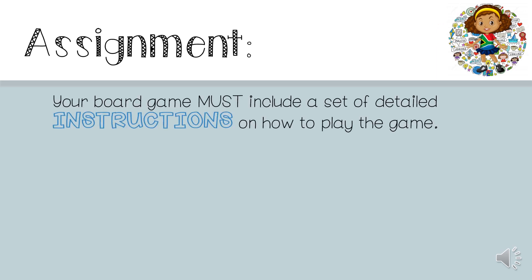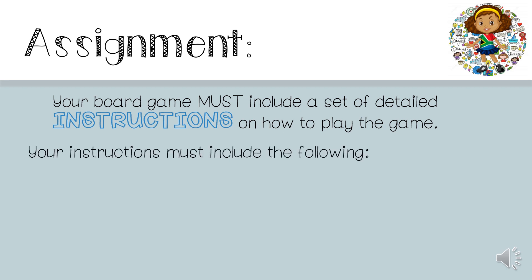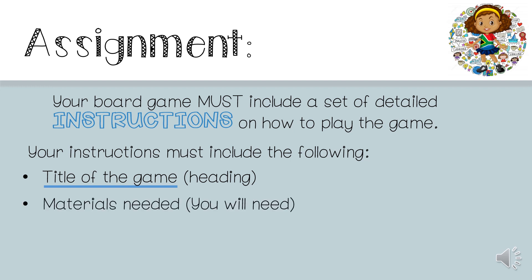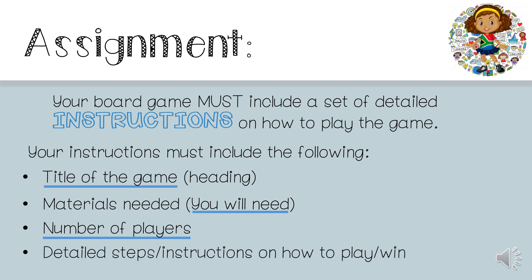Your board game must include a set of detailed instructions on how to play the game. Your instructions must include the following: the title of the game, which is the heading; materials needed — this is the 'You Will Need' part from the example; the number of players; and then detailed steps or instructions on how to play or win.